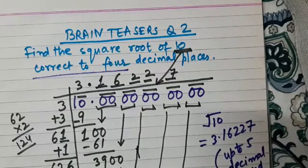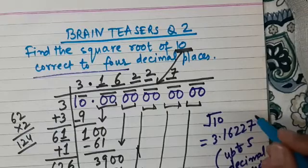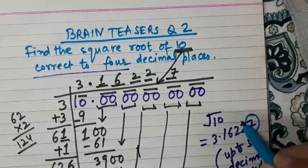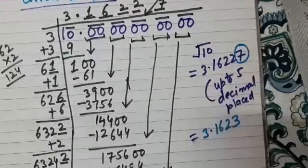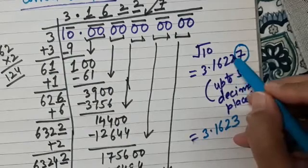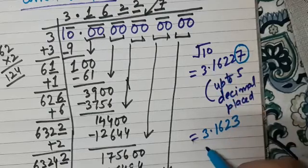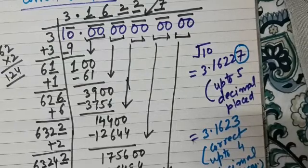We need to find the square root of 10 correct to 4 decimal places. Observe the last digit of the quotient — 7 is more than 5, so we add 1 to the previous digit. Therefore, the square root of 10 is equal to 3.1623, correct to 4 decimal places. The digit 3 has come because we added 1 to the digit 2. I hope this question is clear to all of you. Practice this one, bye bye, take care.